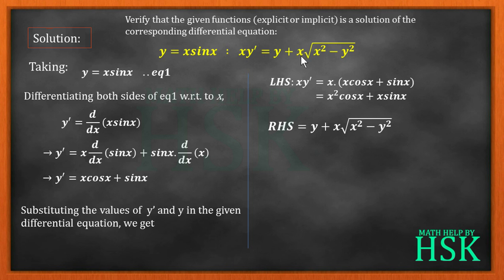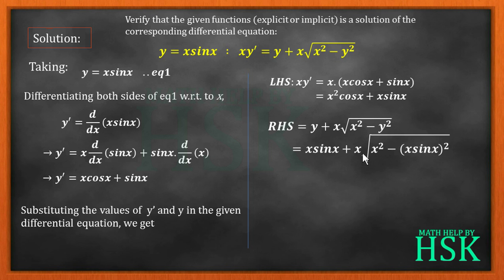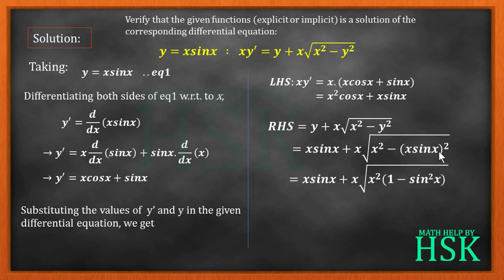Now taking the right-hand side, y + x√(x² - y²), and substituting y = x sin x, we get: x sin x + x√(x² - x² sin² x). Taking x² common inside the square root gives x sin x + x · √(x² cos² x) = x sin x + x² cos x, which equals the left-hand side.